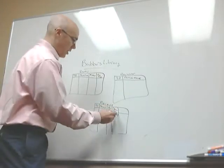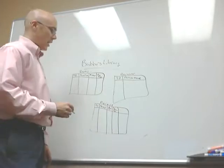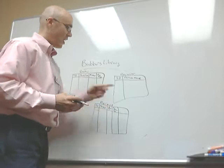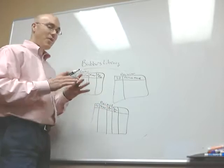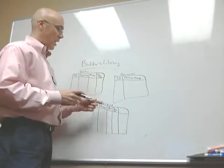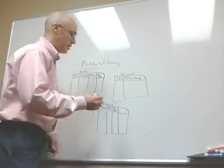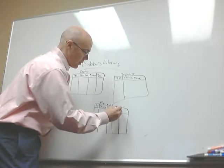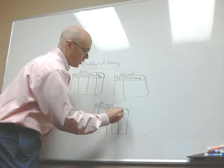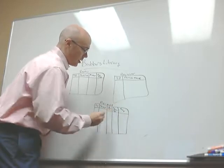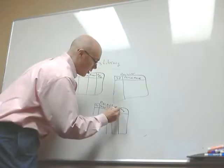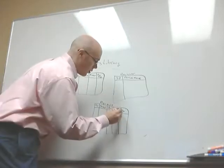Another column we're going to have is reviewer ID, which links to the Reviewer table. And the fifth and final column in the Reviews table is the date — the date for the review.